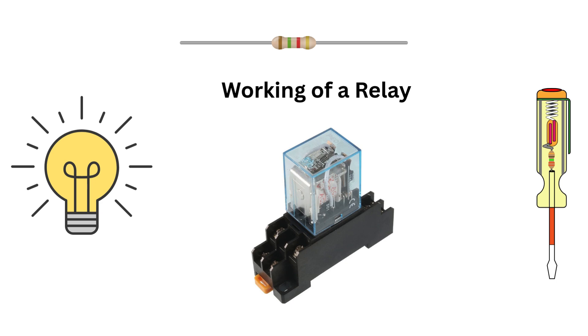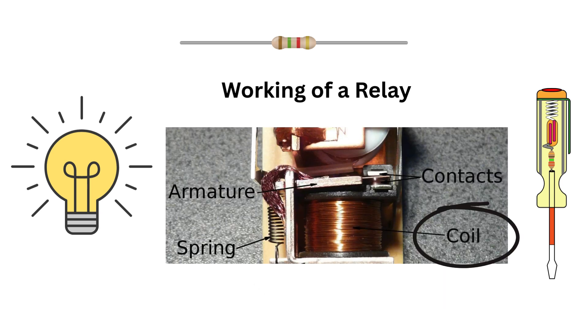A relay consists of four main parts. Electromagnet or coil, it generates a magnetic field when electricity passes through it. Armature or moving contact, which moves when the magnetic field is generated.